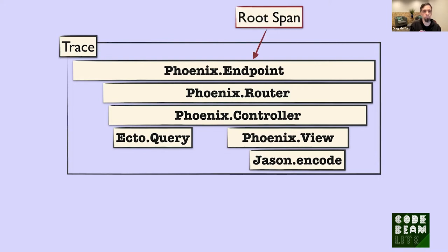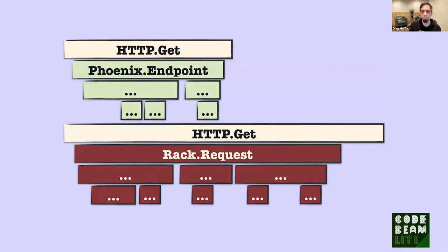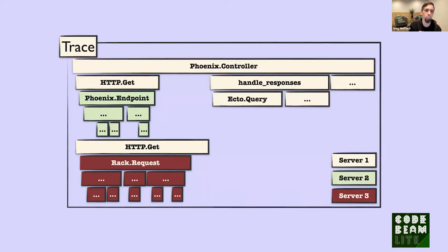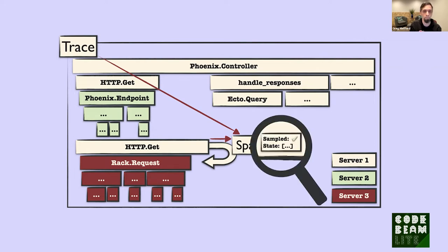Each span also knows about the overall trace it belongs to. There's a top-level span in the trace that has no parent — we call that the root span. We can also represent concurrency in these trace visualizations. Here you can see a Phoenix controller making two parallel HTTP calls using task.async before proceeding with handling the responses, which includes making a database query. Where distributed tracing really shines is when we think about what happens within each of those HTTP calls — we can visualize which services were responsible for which part of the request by looking at the colors.